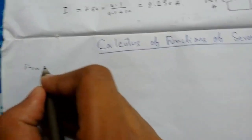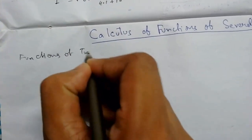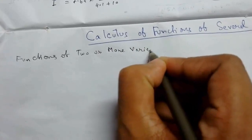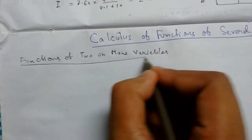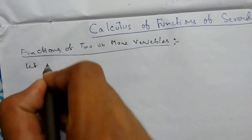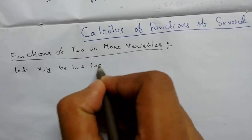So first we'll be learning about functions of two or more variables. Let x comma y be two independent variables.